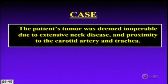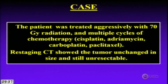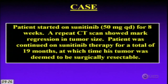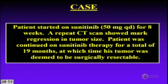The tumor was deemed inoperable due to extensive disease and proximity to the carotid artery and trachea. The patient received aggressive radiation and chemotherapy. A restaging CT after a year showed the tumor unchanged in size and still unresectable — that's weird, as the patient shouldn't still be alive. Sunitinib was started, and the patient actually started doing better.